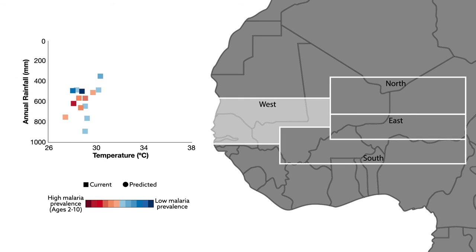Far western Africa, however, will see less rainfall and increased temperatures. Both changes work to hinder the spread of the disease. And because the region is usually near the threshold for a malaria outbreak, residents of these villages can expect fewer and less serious outbreaks.